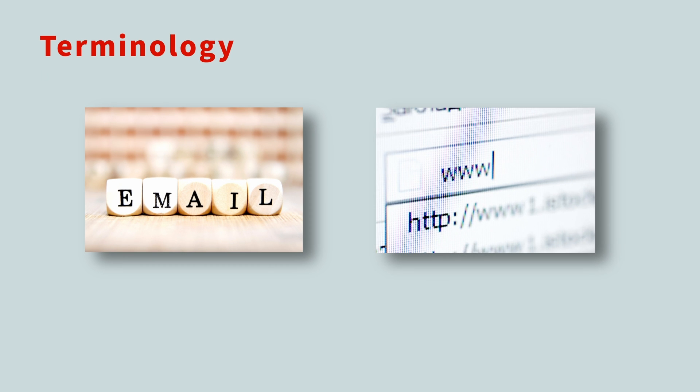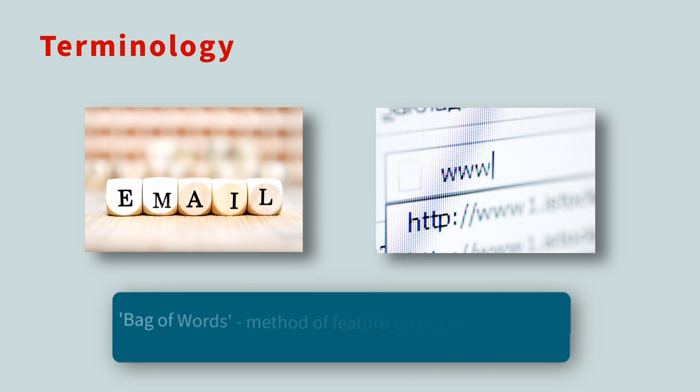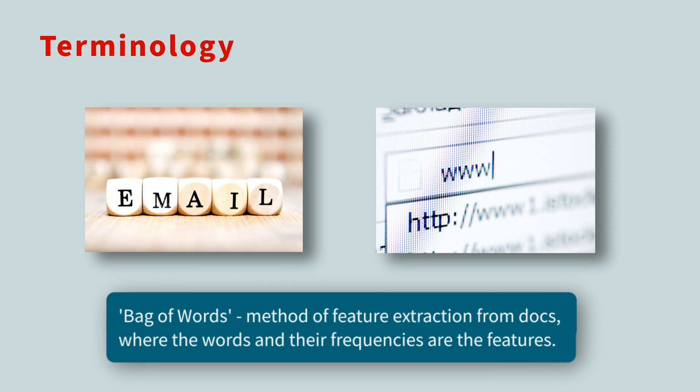In natural language processing, any text from an email to a web page is called a document, or doc for short. The process of extracting data from these docs is known as feature extraction. Using this terminology, the bag of words model can be described as a method of feature extraction from docs, where the words and their frequencies are the features.